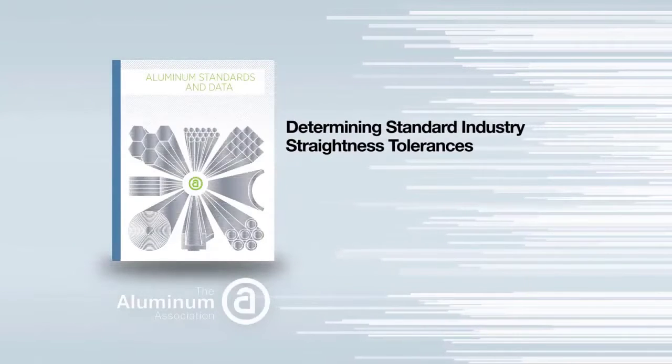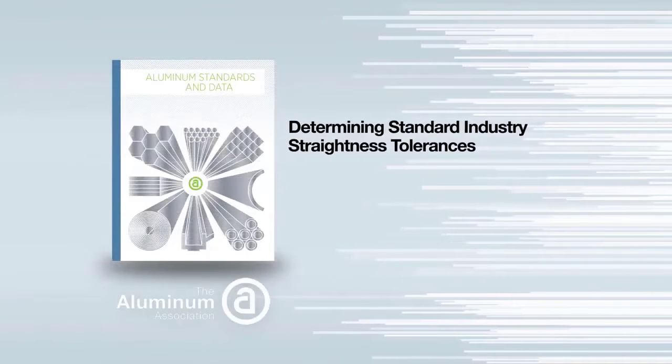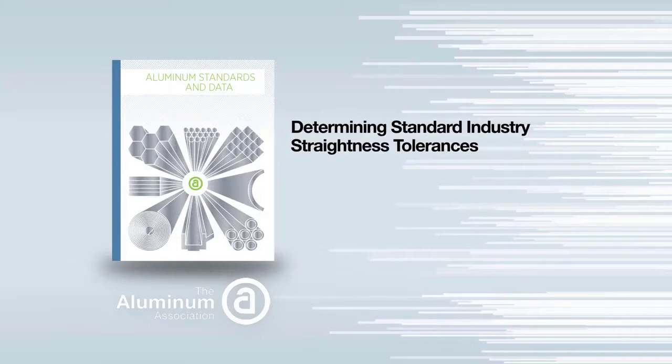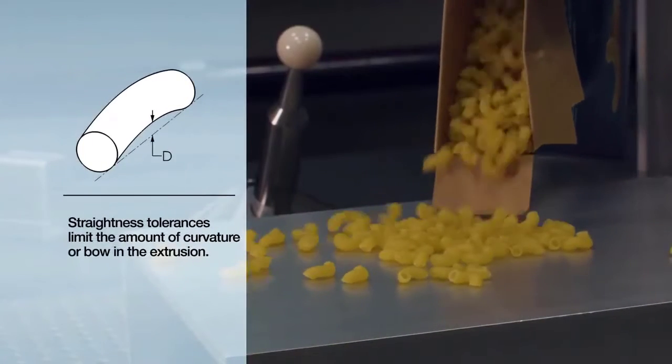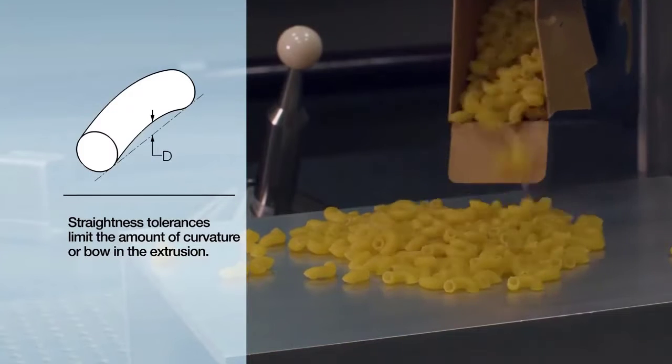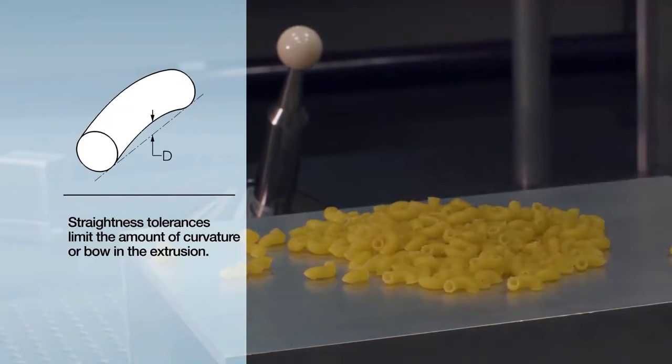This video will help determine if your extrusion meets standard industry straightness tolerances using aluminum standards and data. Straightness tolerances limit the amount of curvature or bow in the extrusion. A simple way to visualize a deviation in straightness is to picture elbow macaroni.